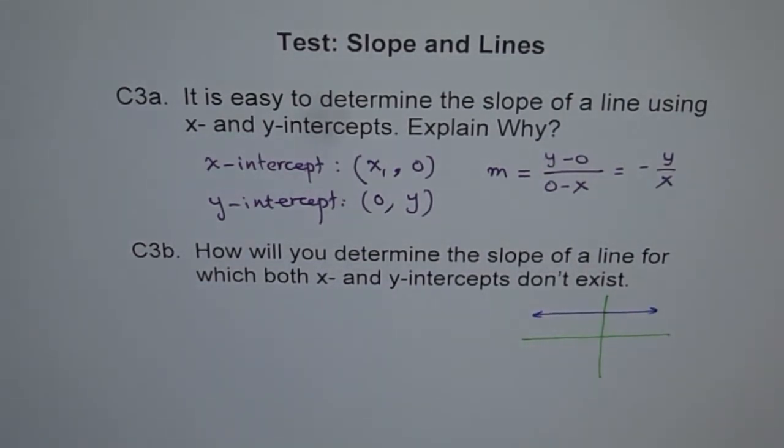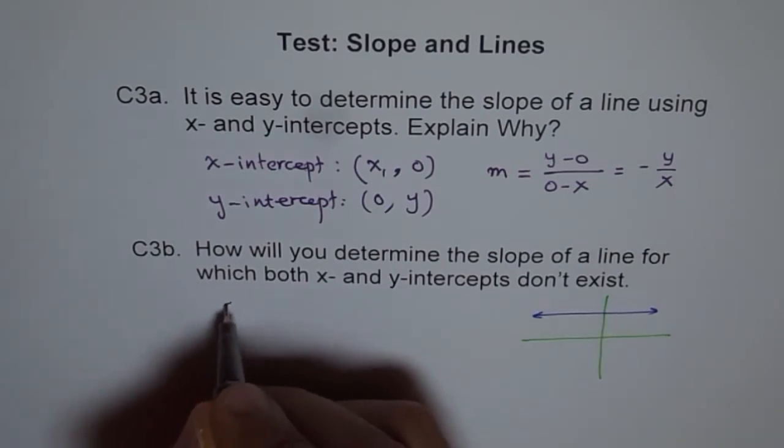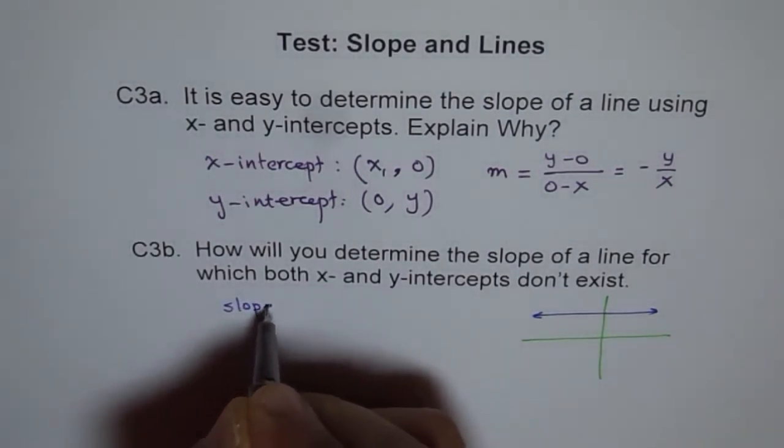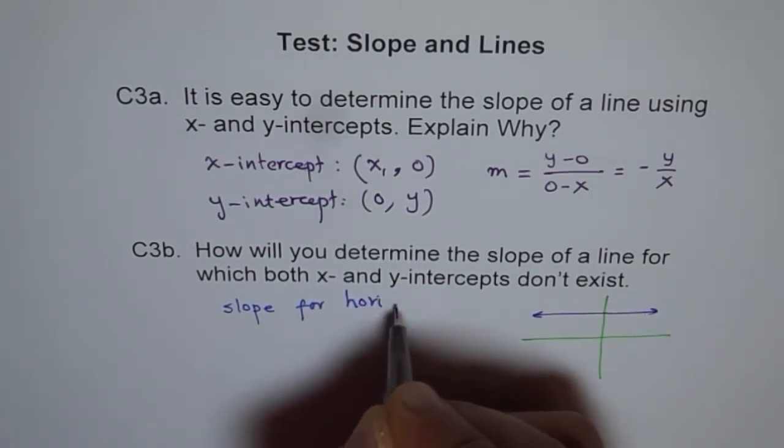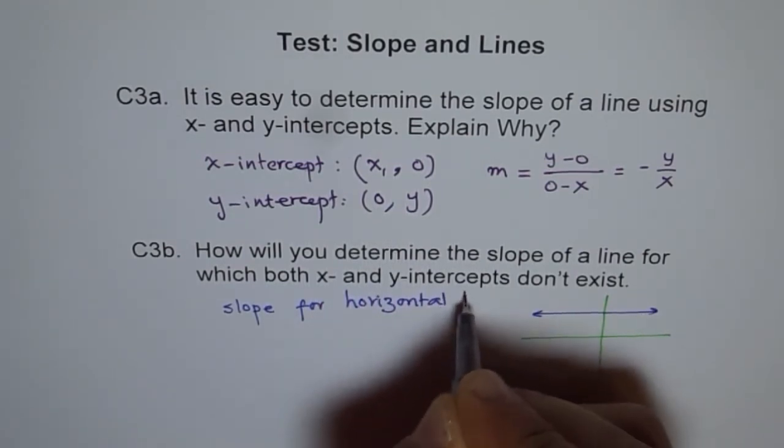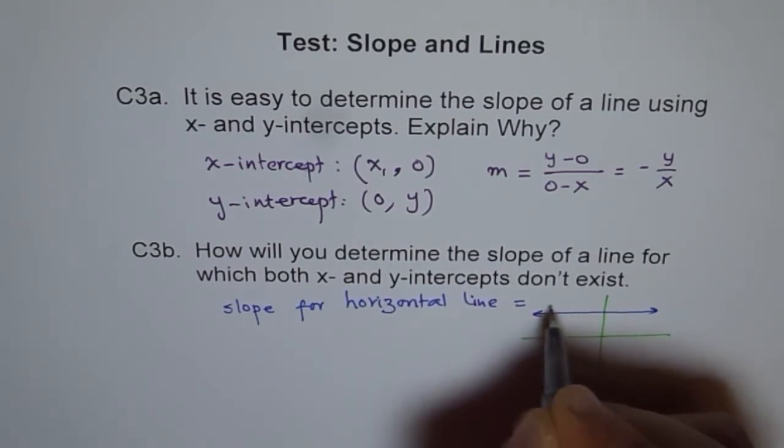So horizontal line, only y-intercept is there, correct? So for a horizontal line, the slope is 0. So slope for horizontal line equals to 0.